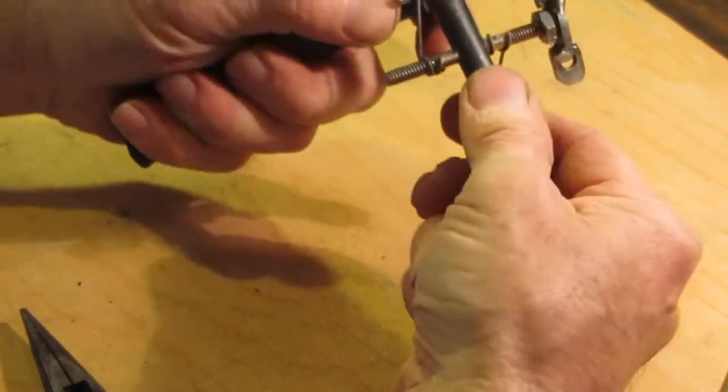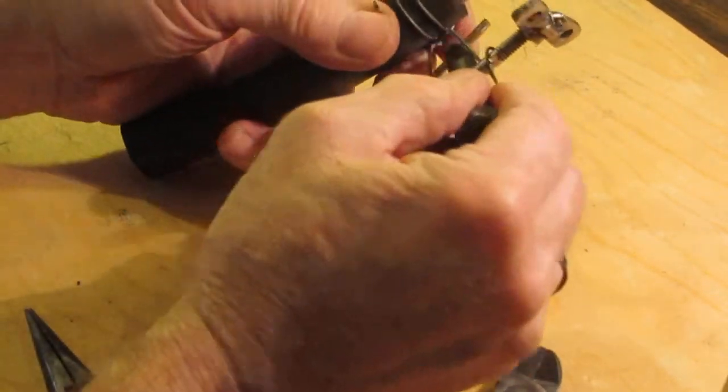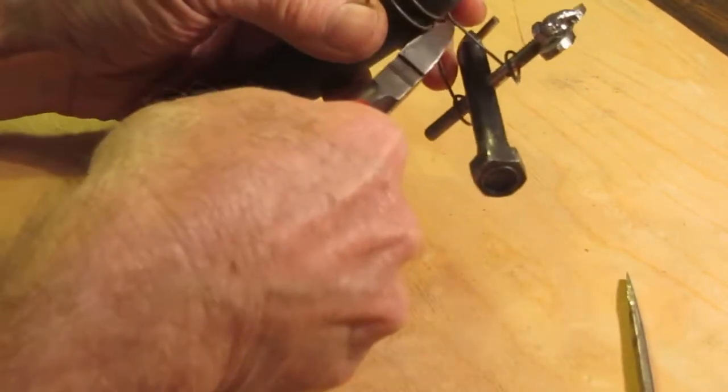When you get to that point, take your tool and wrap it over this way and then loosen the tightener there and clip the wires.